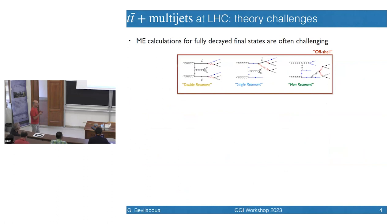Following these measurements, estimates of cross-section ratios have also been released. It is interesting to point out that to date there is a slight tension at the level of the measurement of tt̄bb̄ over tt̄JJ cross-section ratio, which clearly points to possible directions where the modeling should be improved. This is yet another motivation for looking in more detail into the broad topic of tt̄ plus multi-jet.